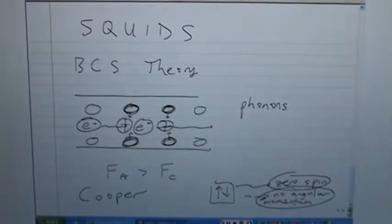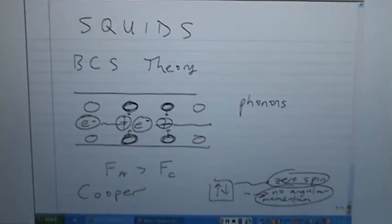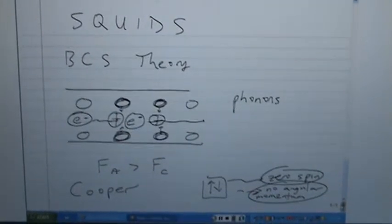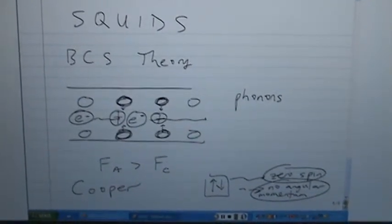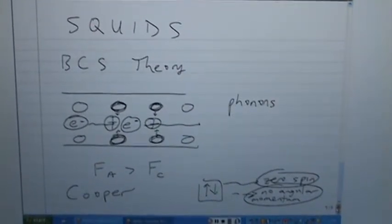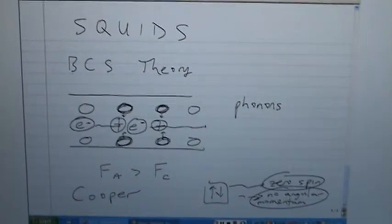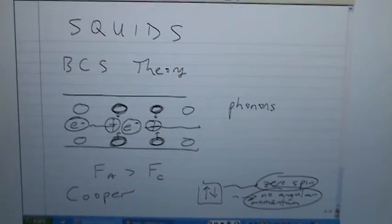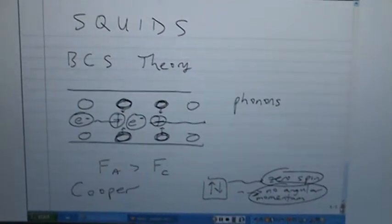Unfortunately, this theory, the BCS theory, can't explain events such as high-temperature superconductivity. If we could write a theory capable of explaining high-temperature superconductivity, we would effectively change the way the world does science and technology. We would change the face of this planet.